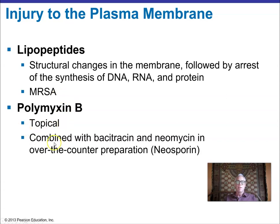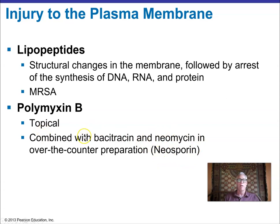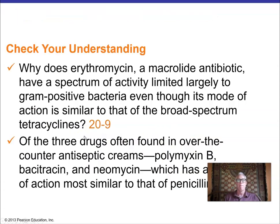Polymyxin B is used topically along with bacitracin and neomycin to make a triple antibiotic ointment often used in first aid. You can go to the drug store and get first aid ointment containing these antibiotics.